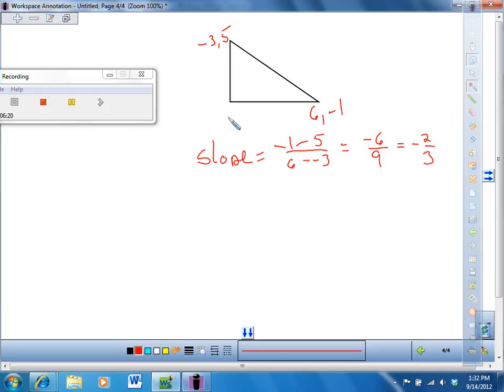The other way you can do this—this is called a slope triangle when there's a right angle right here. Another way you could do it, although it's not always as nice and accurate, you could count the boxes. So from negative 3 to 6, it's 9. And from negative 1 up to 5, it's 6. So you're going down 6 and over 9. So therefore, you have a slope of negative 6 over 9.